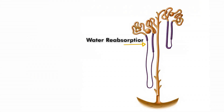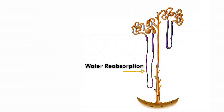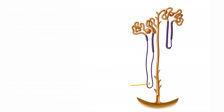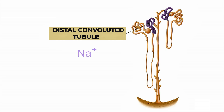Next, some water is reabsorbed from the descending limb of the loop of Henle, and then salt is reabsorbed from the ascending limb. After this, sodium and a small amount of water are reabsorbed from the DCT.